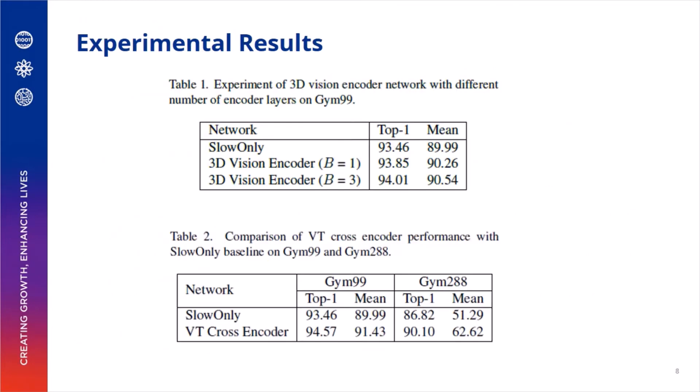We present our experimental results on the FineGym dataset. We adopt Slow-Only ResNet-50 as our visual backbone, pre-trained on FineGym. In the first table, it is shown that both our 3D Vision Encoders with single and three hidden layers improve accuracy over the baseline model, showing that the transformer encoder is effective in learning better temporal semantics. In the second table, we observe significant improvements over the baseline model, showing that our visual text cross-dependencies learn better semantics and complementary representations in fine-grained actions.